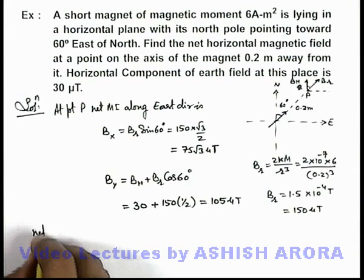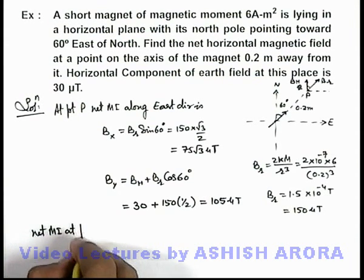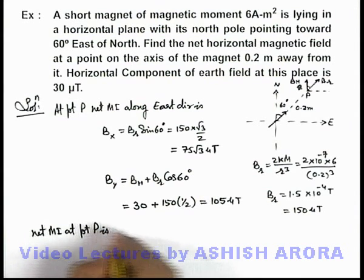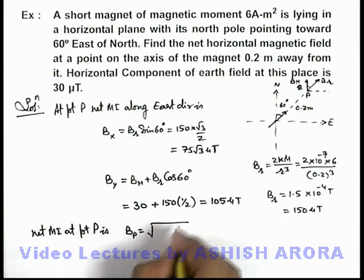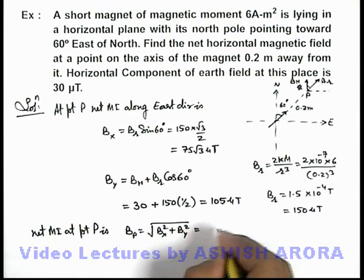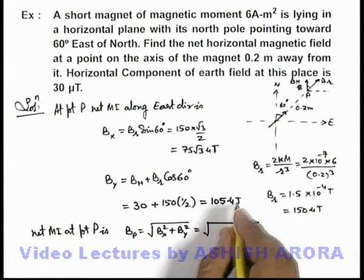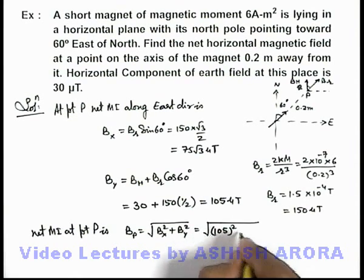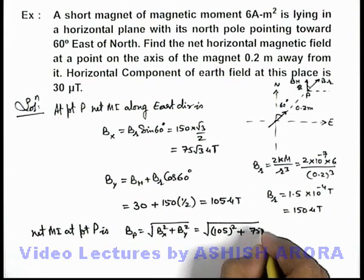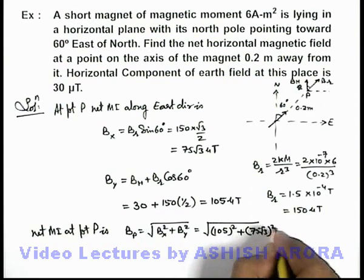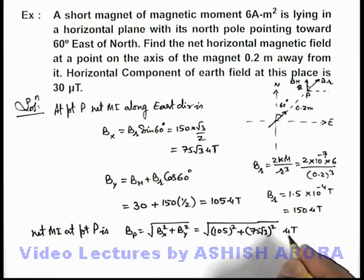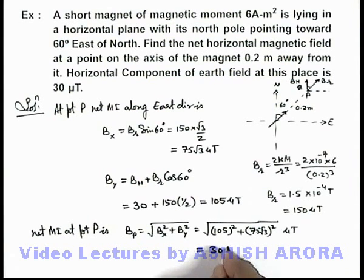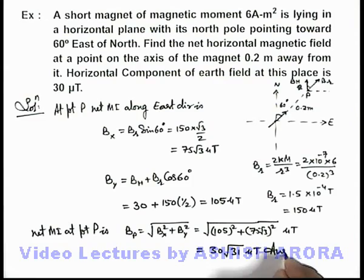So here we can write net magnetic induction at point P is, this net B_p we can write as √(B_x² + B_y²), which can be written as √(105² + (75√3)²). This in micro tesla, and on simplifying we are getting 30√31 micro tesla. That will be the answer to this problem.